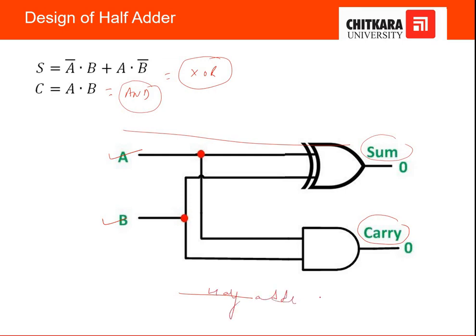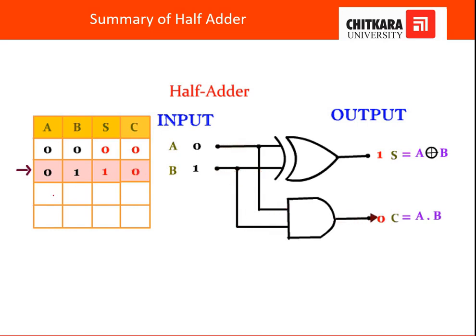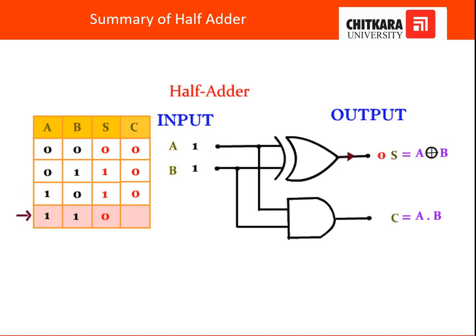To summarize the half adder circuit: we have two inputs A and B, and the outputs are sum and carry. When inputs are 0,0 — sum=0, carry=0. When inputs are 0,1 — sum=1, carry=0. When inputs are 1,0 — sum=1, carry=0. When inputs are 1,1 — sum=0, carry=1. This is the complete summary for the half adder circuit.